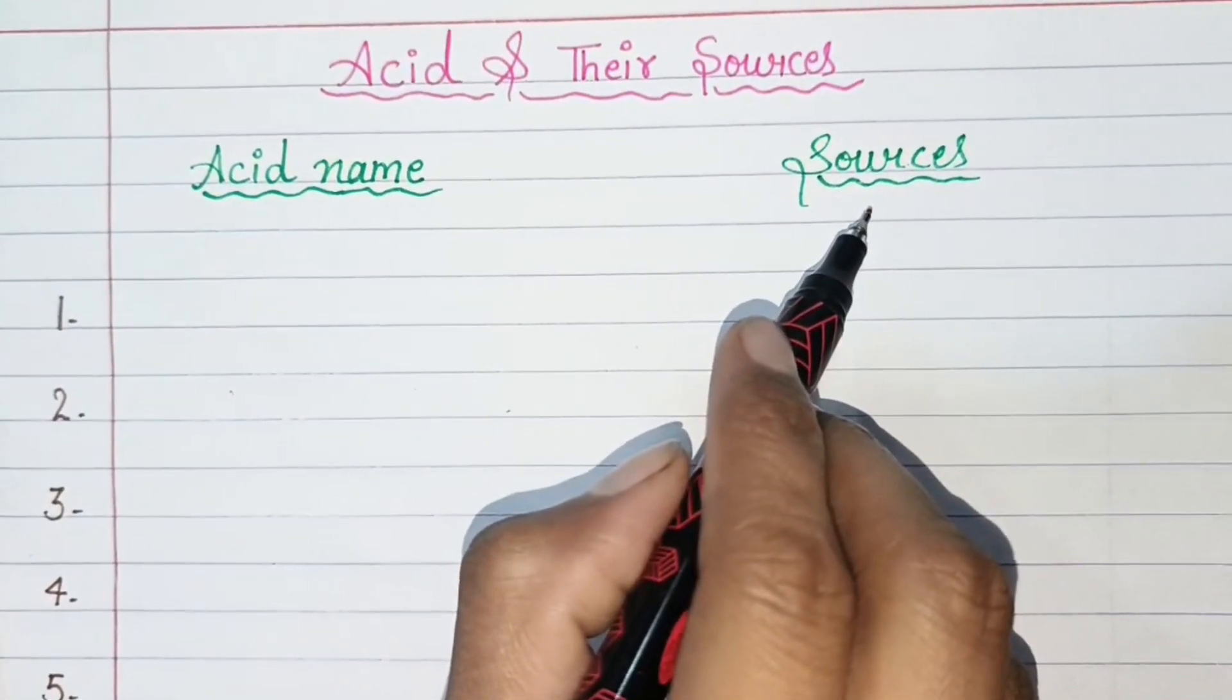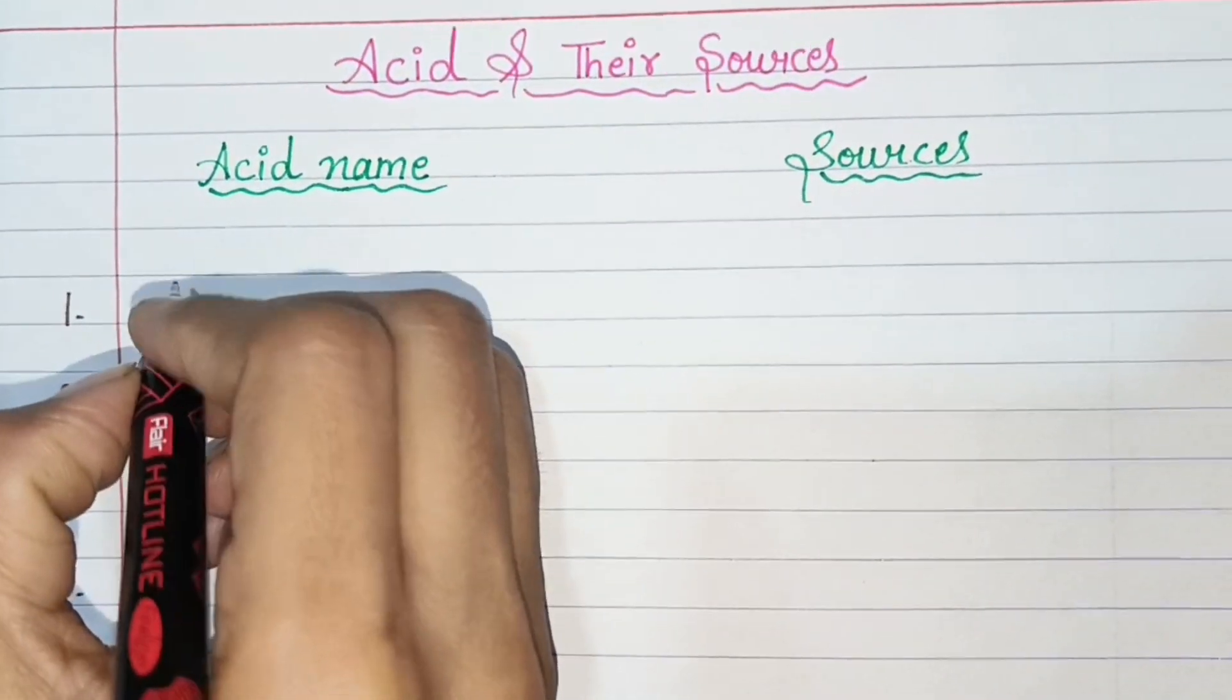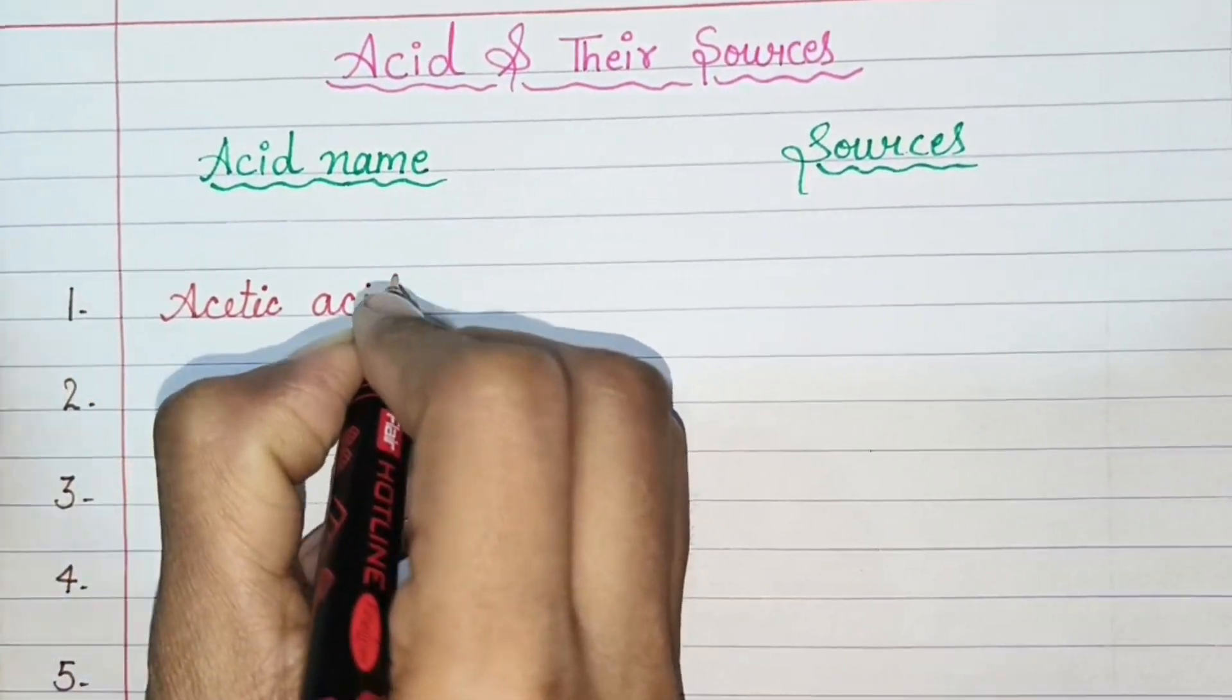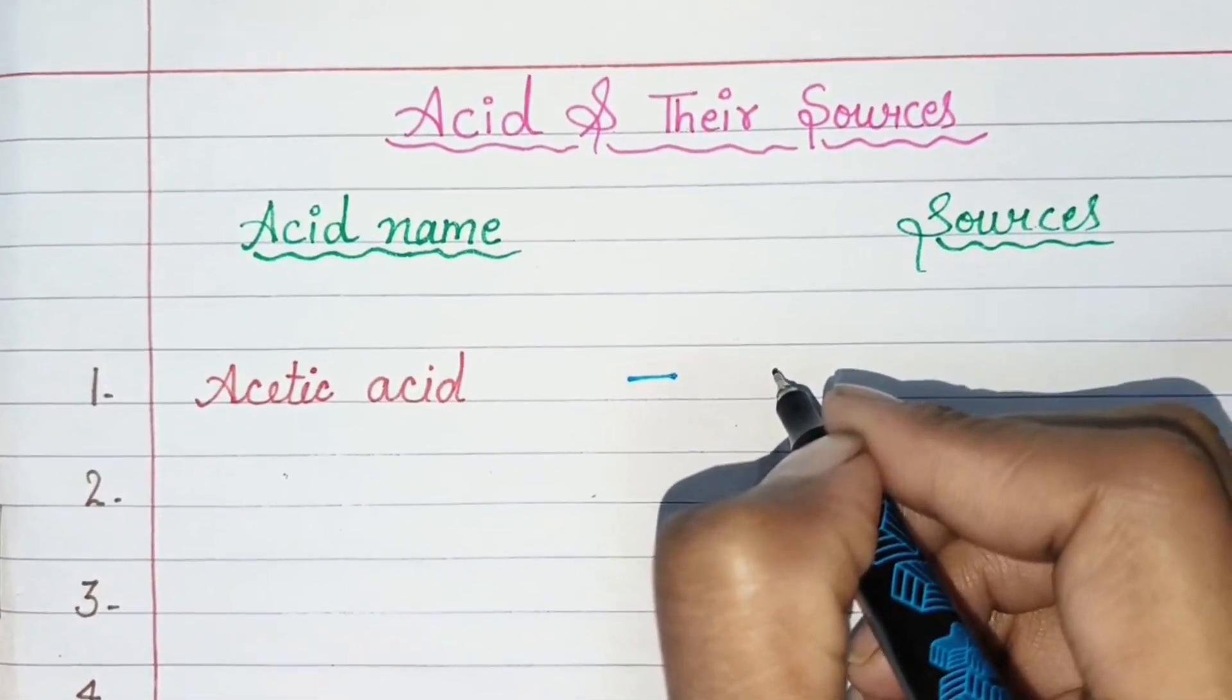Acid name and sources. First, acetic acid. Sources: vinegar.